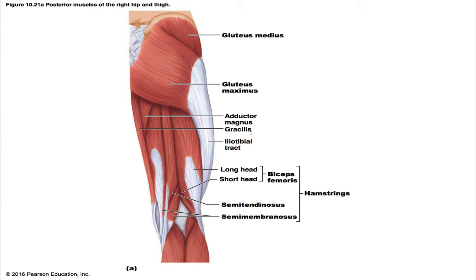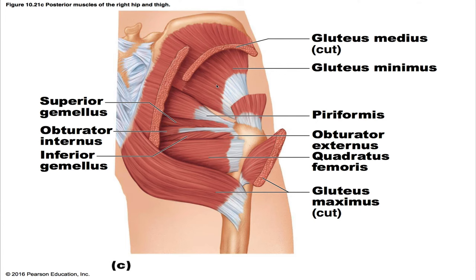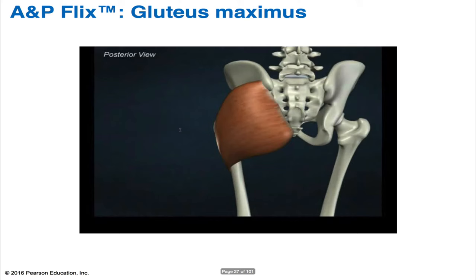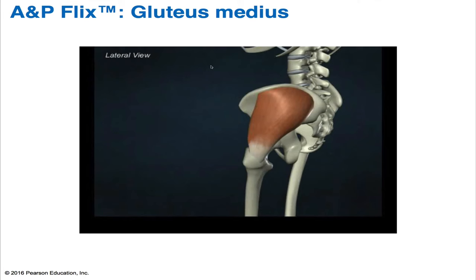The gluteus minimus is the smallest and deepest of the gluteal muscles. Its origin is between the anterior and inferior gluteal lines on the external surface of the ilium, and its insertion is the anterior border of the greater trochanter of the femur. Its action and nervous supply are the same as the gluteus medius — the superior gluteal nerve. In the cadaver photograph you can see the gluteus medius, gluteus maximus, the median sacral crest, and the gracilis. Be sure to view the animations for the posterior view of the gluteus maximus and the lateral view of the gluteus medius.